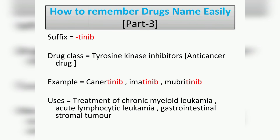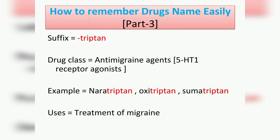The next suffix is '-tinib', which belongs to the drug class tyrosine kinase inhibitors, an anti-cancer medication. Examples include canetinib, imatinib, and mepritinib. Their usage is the treatment of chronic myeloid leukemia, acute lymphocytic leukemia, and gastrointestinal stromal tumors.